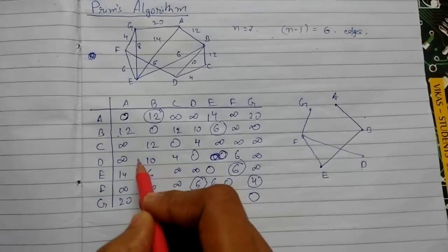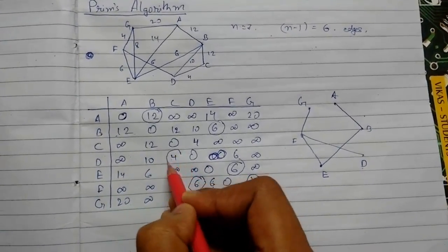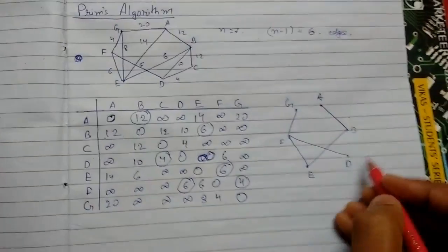Now we move to D. In D the minimum is 4, so we'll take it. D to C, C is something like this.